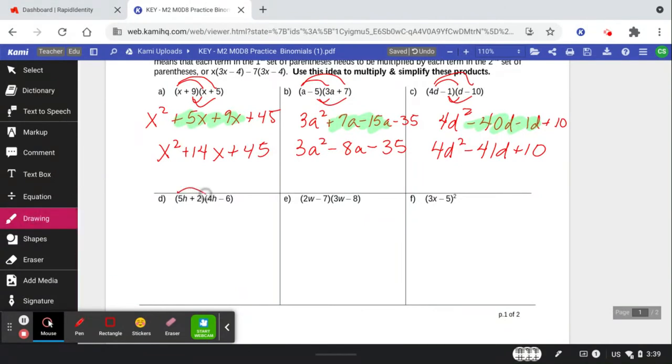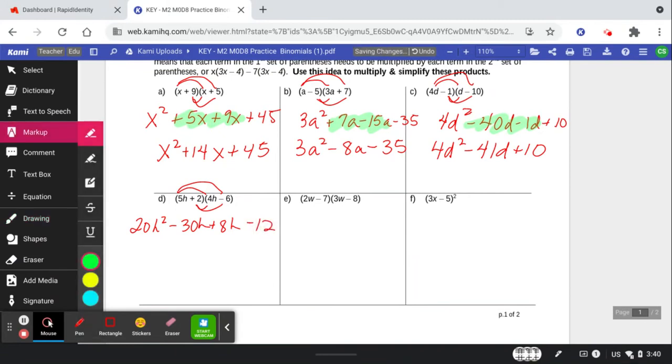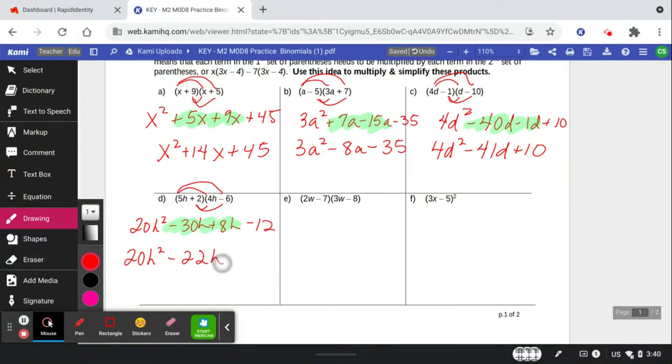5 times 4. 5 times negative 6h. 2 times 4h. And 2 times negative 6. Combine that middle term. Okay, negative 30 plus 8. Do that on a calculator if you need to. Did you get the negative 22?